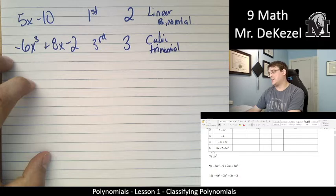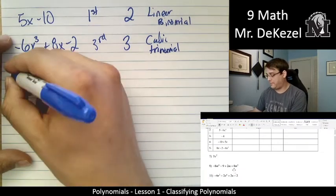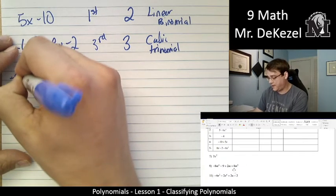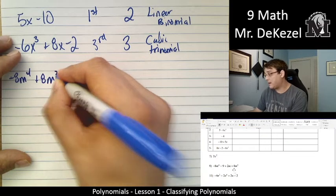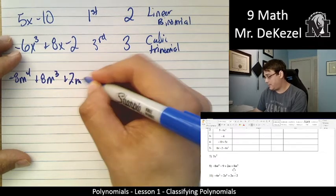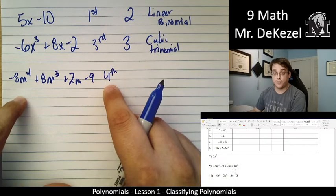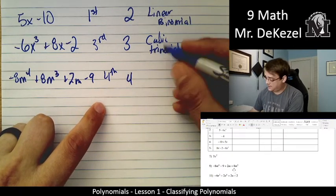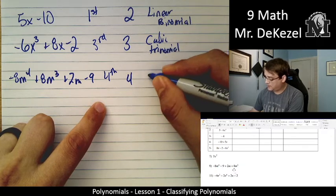Let's skip number 7. Let's just do number 9 and number 11. So, let's put it in standard form first. -8m⁴ + 8m³ + 2m - 9. So, the highest exponent we have makes it fourth degree. It has four terms.